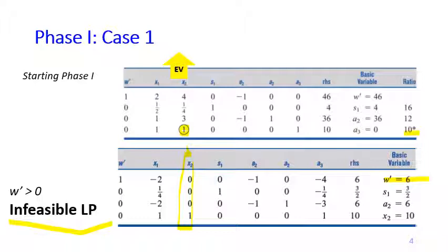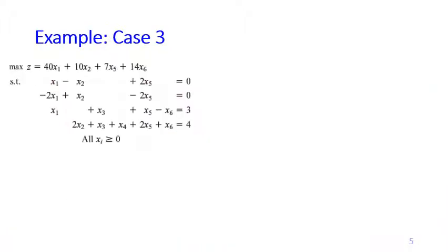We can conclude that this problem is infeasible because at the end of phase one we obtained an optimal table but w prime is greater than zero. Additionally, there is an artificial variable with a positive value as a basic variable — in other words, the optimal solution proposes something that does not exist in the real world. Now let's look at another example where the optimal table at the end of phase one falls into case three.